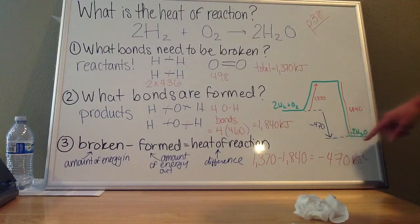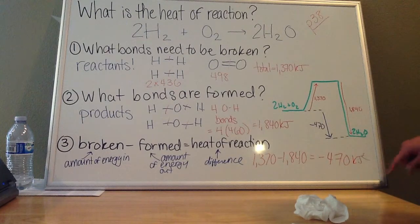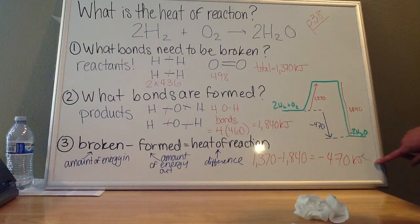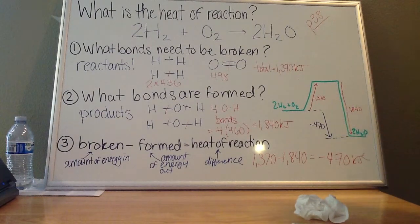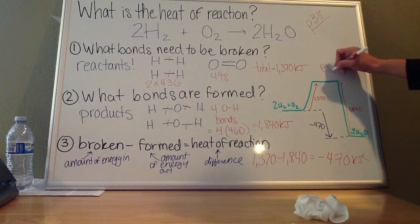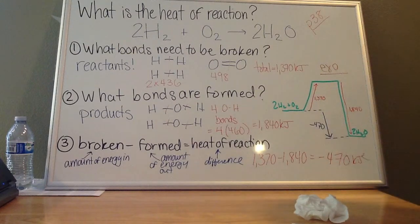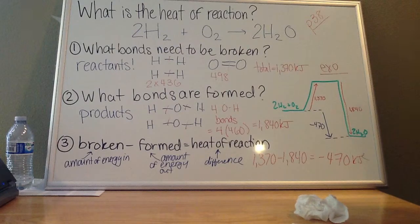So that means that my heat of reaction in this case is negative 470. So I have a negative heat of reaction. I lost more energy than I used up. So this is going to be an exothermic reaction. And that's how you find the heat of reaction using your bond energies.